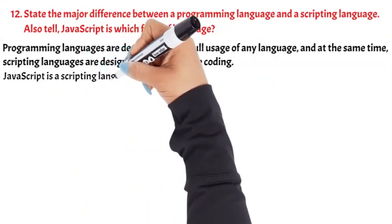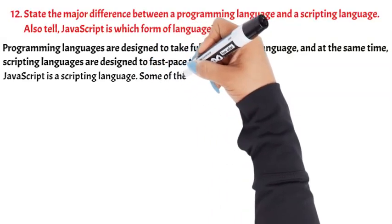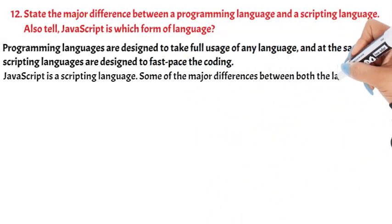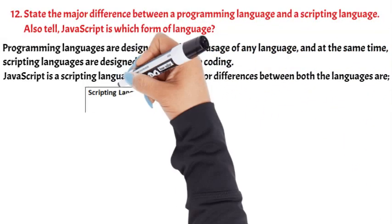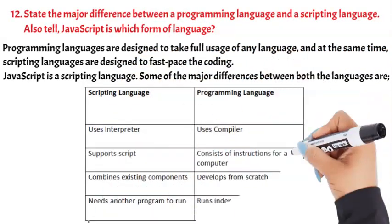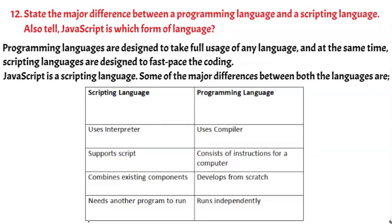Question 12: State the major difference between a programming language and a scripting language. JavaScript is a scripting language. Key differences: 1. Scripting uses an interpreter; programming uses a compiler. 2. Scripting supports scripts; programming consists of instructions for a computer. 3. Scripting combines existing components; programming develops from scratch. 4. Scripting needs another program to run; programming runs independently.